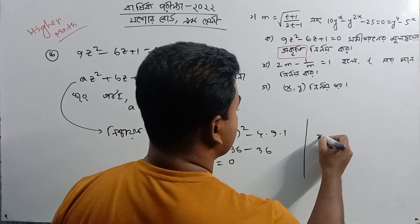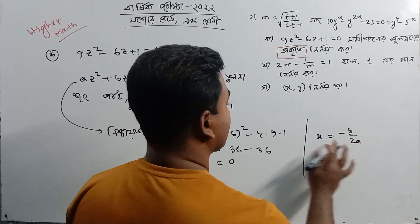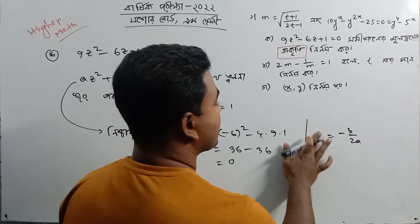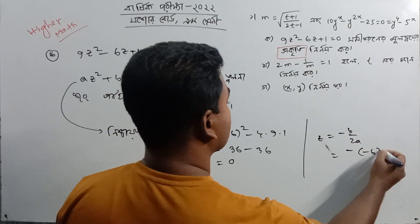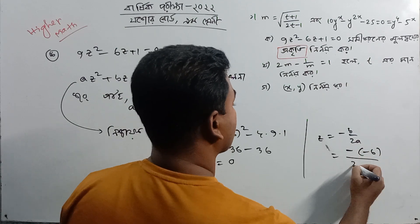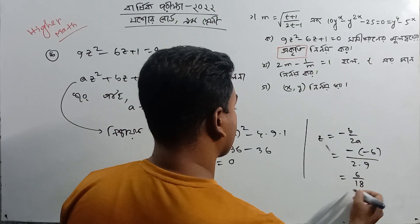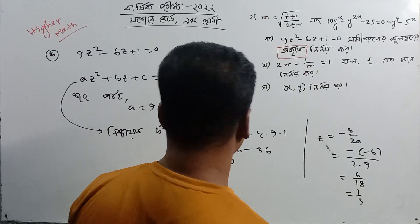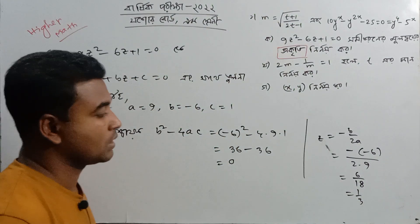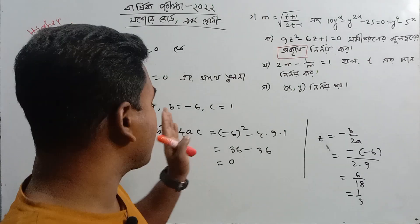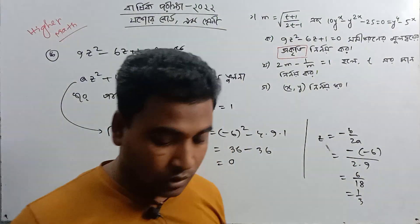It is equal to minus B. So we have to say that it is equal to 6 by 18, that means 1 by 3. So z equals 1 by 3, which is 2 times.